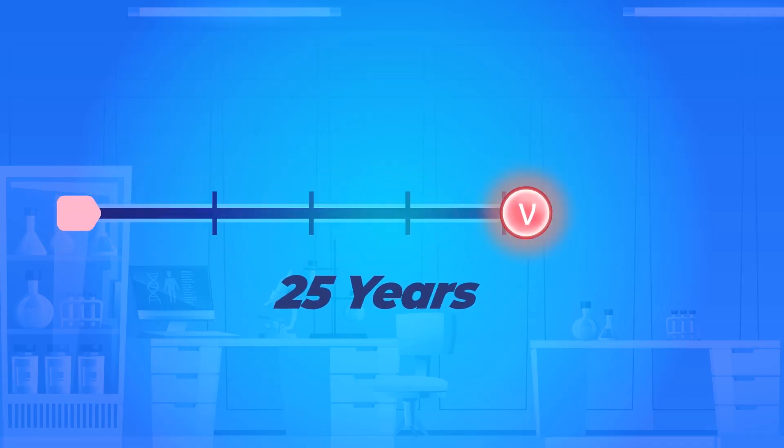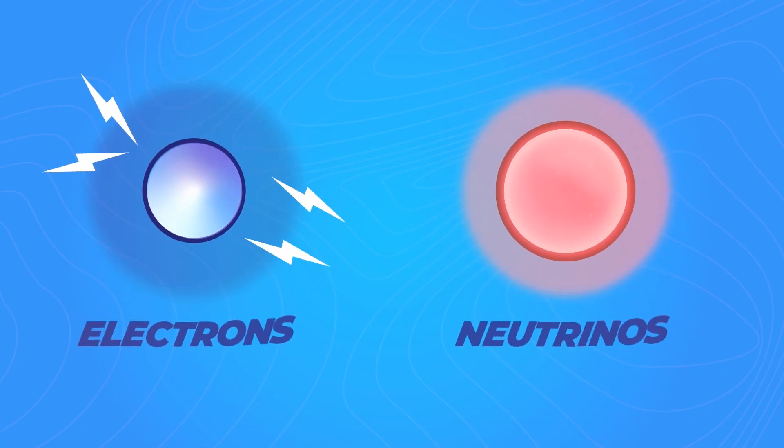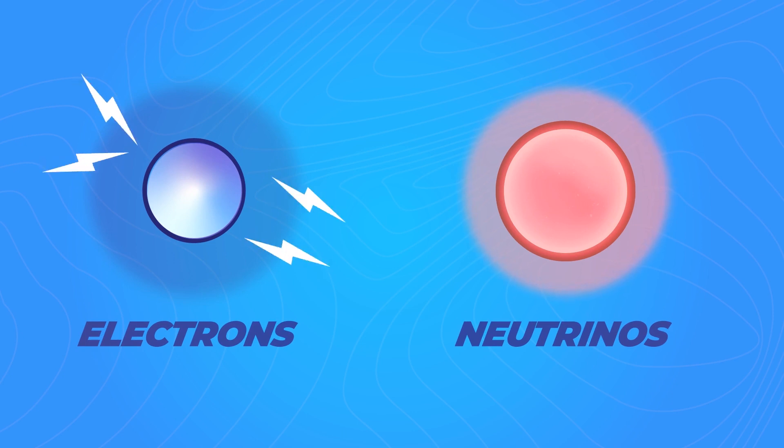It would be another 25 years until the first confirmed detection of a neutrino took place, and they were found to be partners of electrons. Electrons carry an electric charge, but neutrinos are electrically neutral, which means that they are not affected by electromagnetic forces.